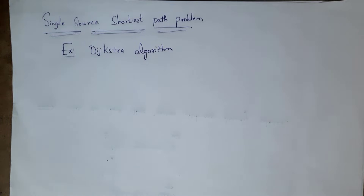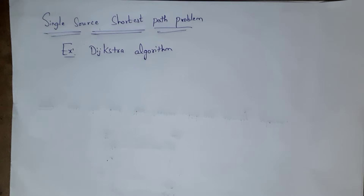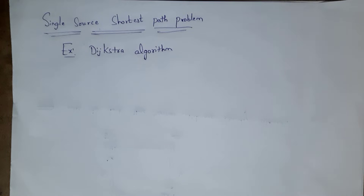In the single source shortest path problem, initially we need to select one single node as the source node. From that source node, we need to find the shortest distance to all other nodes. I will give one example so that you can clearly understand Dijkstra's algorithm.